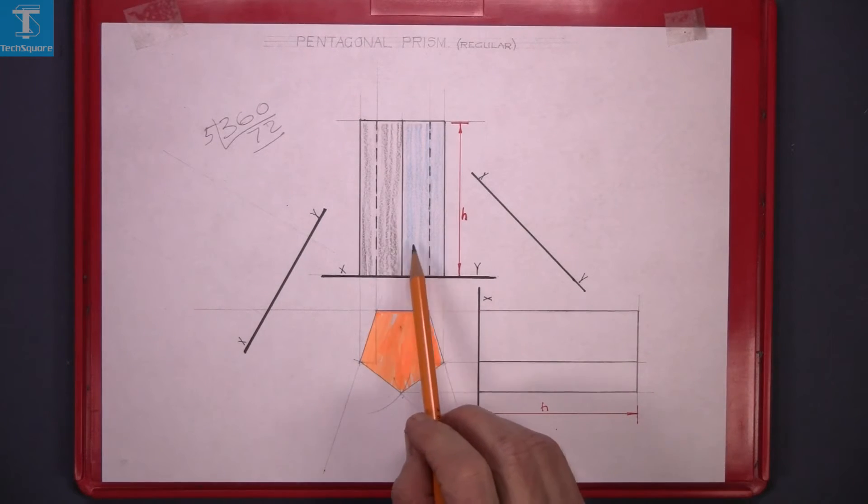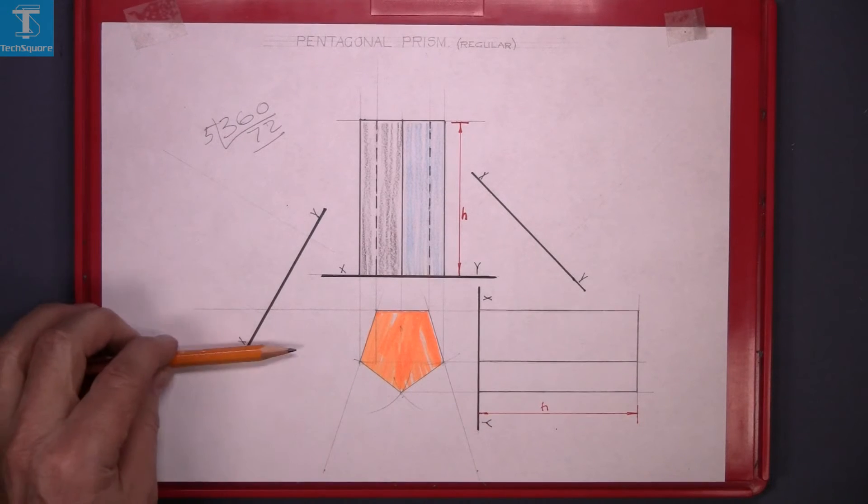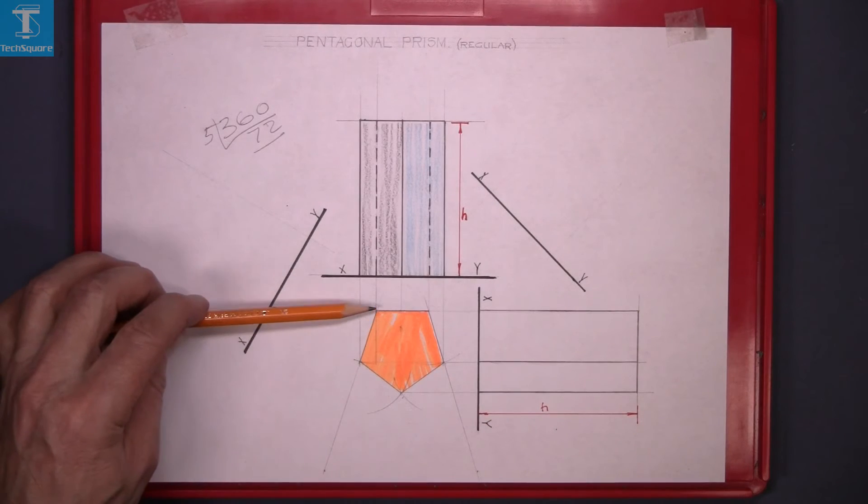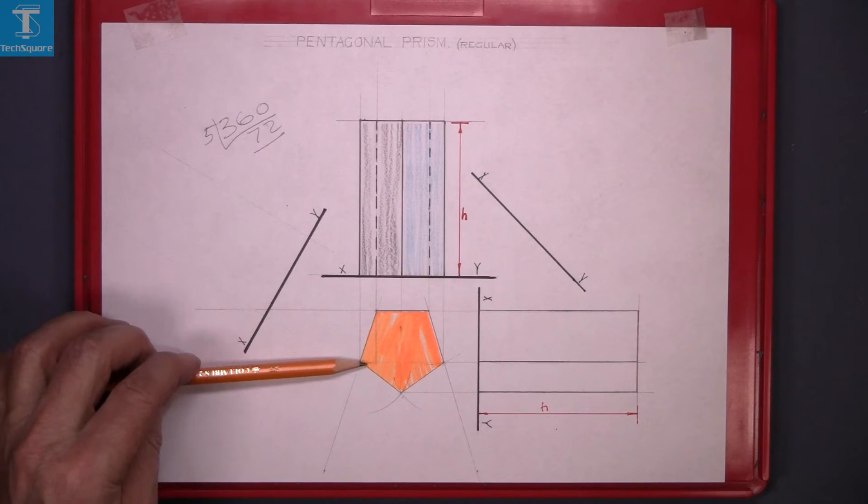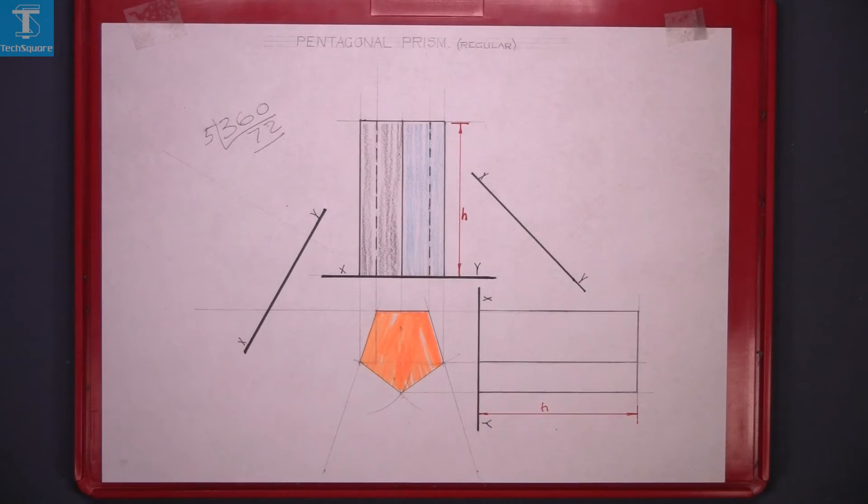You can see these three lines in above. And looking across this way you can see these three lines. That point, that point and that point. That's the three lines there. And that's the end view.